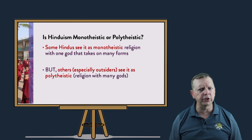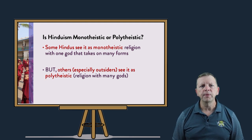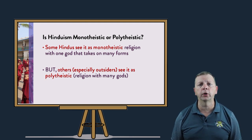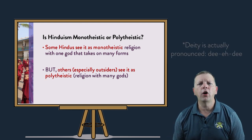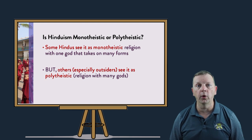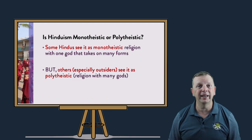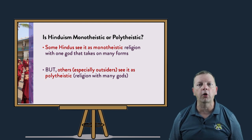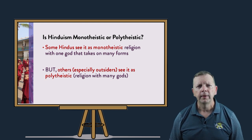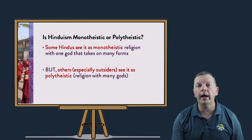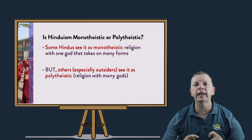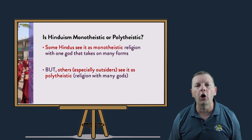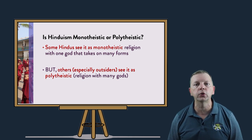So, Hinduism is polytheistic, right? Well, that depends. Some Hindus see it as a monotheistic religion because each of these deities are just a form of Brahman — kind of like how Christians have God in three forms as well. Other Hindus, and especially those who are not Hindu, look at Hinduism as being polytheistic because there are so many different gods. But even other Hindus see Hinduism as being neither polytheistic nor monotheistic, believing that there is just one soul that connects and is in all living things, and that there is no separate god.